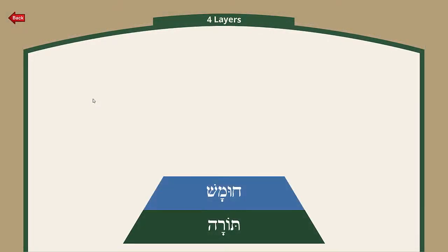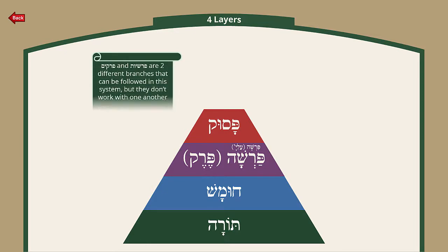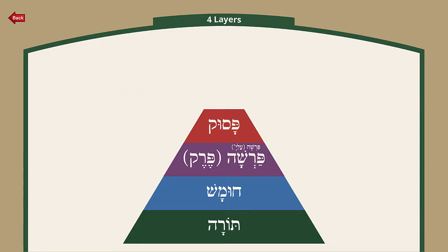If we look at this section, it shows us a little bit about Torah Shebiksav and how it's structured. There is one Torah, five Chumashim, and within that there are Parshiyos or Perakim — these are two different routes you can take. Either you take the Parsha route, where there are 10, 11, or 12 Parshiyos in each Chumash, or you take the Perakim route with many more. Within every Parsha there are Stumah and Pesuchah sections, or you can go the route of Aliyos, and within that there are Pesukim. Perakim and Parshiyos are two different branches that don't work with one another — Perakim overlap from one Parsha into the next. For example, Perek Vav starts in Bereishis and continues into Noach, so it doesn't align with the Parsha.